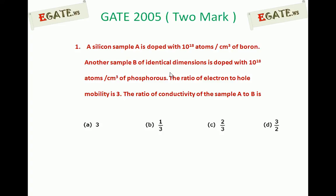Given silicon sample A is doped with boron atoms of 10^18 per cm³ and another sample B of identical dimensions is doped with phosphorus atoms with same 10^18 atoms per cm³, and given electron to hole mobility μn/μp is 3. Then we need to calculate the ratio of conductivity of sample A to sample B, σA/σB. The correct answer for this one is B, 1/3 is the answer. We will see the details.